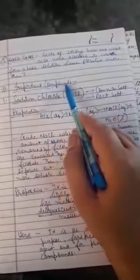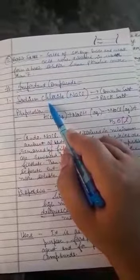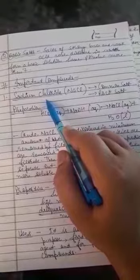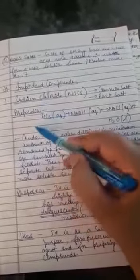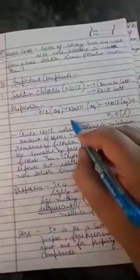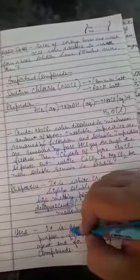Now we discuss the important compounds in your syllabus. Questions will be asked in form of 3 marks or 5 marks: how will you prepare sodium chloride, give its properties and uses. You have to learn the preparation reaction of a particular salt, its properties and uses. At least 3 properties, at least 3 uses, and how it is prepared.